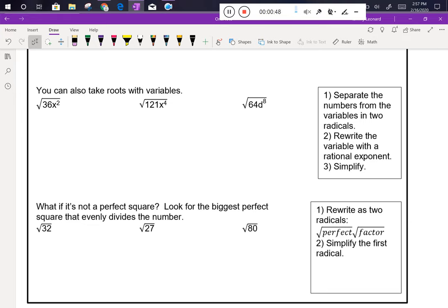Once we start combining numbers and variables, we want to split them apart. We want to do the numbers first and then the variables second. So I'm going to think of this as being the square root of 36 times the square root of x squared. The square root of 36 we know to be 6. The square root of x squared we might immediately realize what it is. If we don't, we could rewrite it with a rational exponent. We could say this is x to the 2 over 2, because we have that invisible index of 2, which is just x to the first or x.